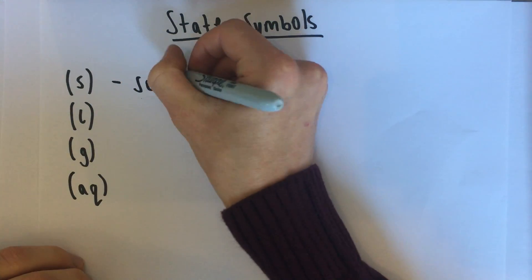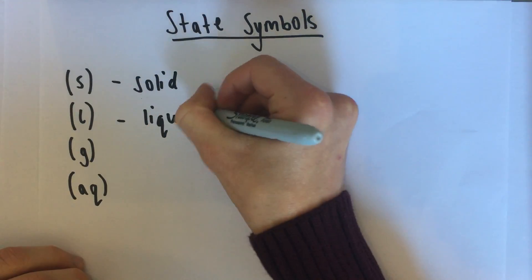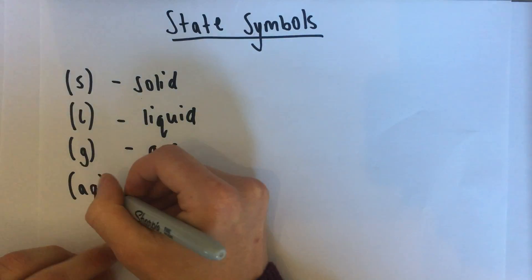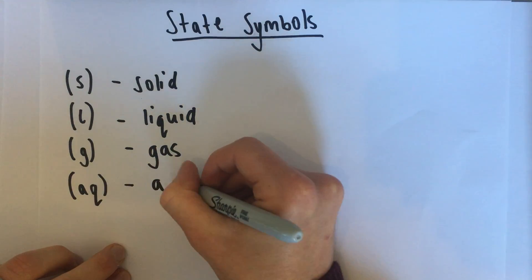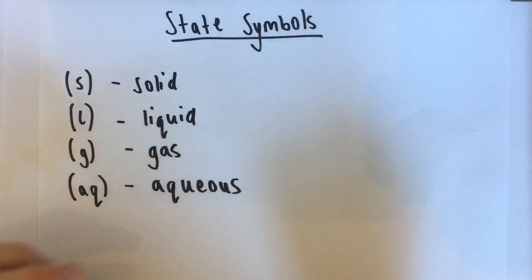S is going to stand for solid, L for liquid, G for gas. So those are the straightforward ones. AQ means aqueous. And aqueous means something that is dissolved in water. So that's quite a specific one, but a lot of reactions involve aqueous things.